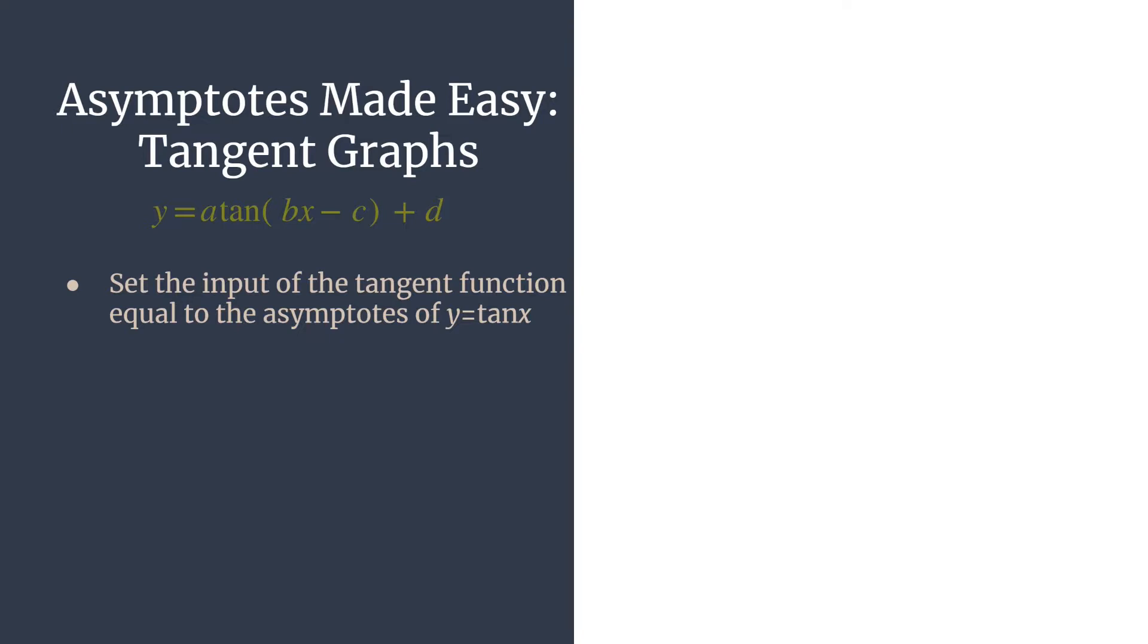What is the input of the tangent function? That's really right here, whatever's in the parentheses, that's the input of the tangent. And really, those are the horizontal transformations. So we'll take whatever's in there, whatever's the input, and we'll set them equal to the parent asymptotes of tangent, which happen at pi over two plus pi k, where k is an integer.